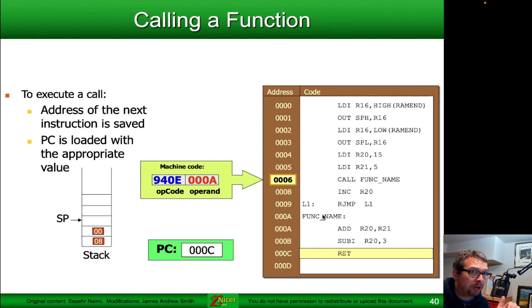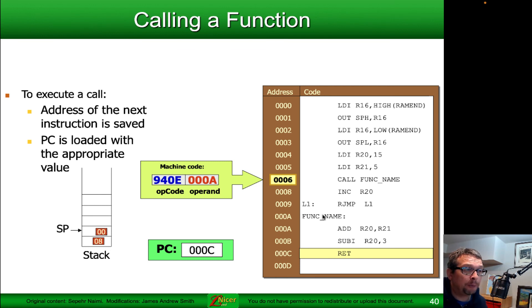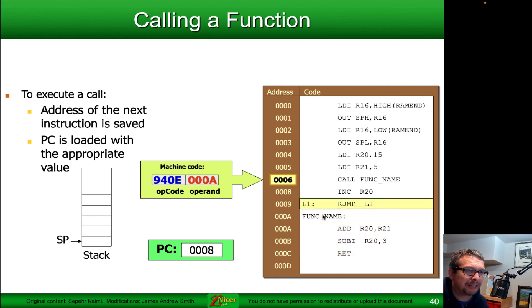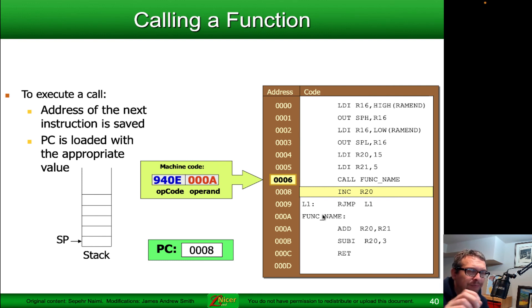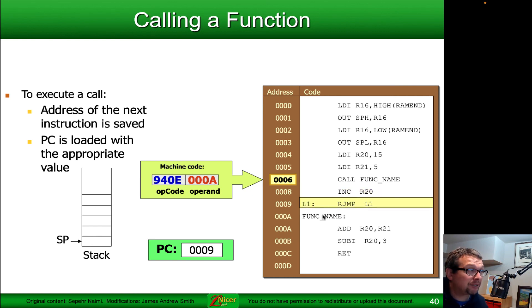When the return command executes, the chip will recognize it as a return and pull that stored address value off the stack automatically. It pops the values off the stack without you having to express it, and moves the program counter to 0x0008. Then it continues operation — in this case going to 0x0009, which is a jump back to 0x0009, creating an infinite loop at that location.